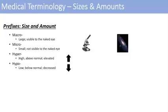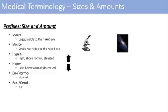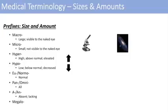A couple of other prefixes you may not be aware of: eu means normal — so instead of hypothermic, you're euthermic, meaning you're at a normal body temperature. Another term is pan or omni, which means all — think of omnipotent meaning all-powerful, or panorama; it encompasses all of something. Another prefix is a or an, which means absent or lacking. And the prefix megalo also means large or larger than average.